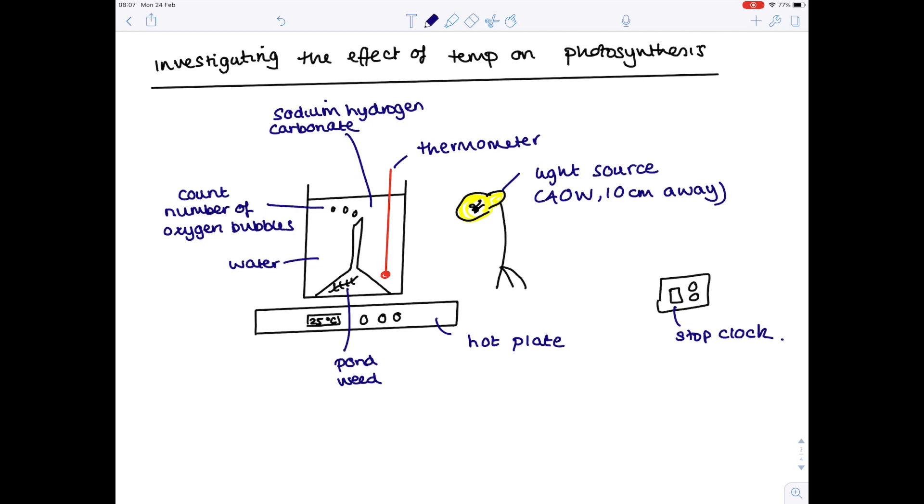Now, if you were to alter a different factor, so if you were to look at how the carbon dioxide concentration affects the rate of photosynthesis, you obviously wouldn't need a hot plate this time. You would alter the carbon dioxide concentration by altering the mass of sodium hydrogen carbonate that you added. And then lastly, if you were interested in how light intensity affected the rate of photosynthesis, you could simply move that lamp 10 centimeters away, 20 centimeters away, 30 centimeters away. But just making sure that the temperature and carbon dioxide levels remain constant so that you only have one independent variable.